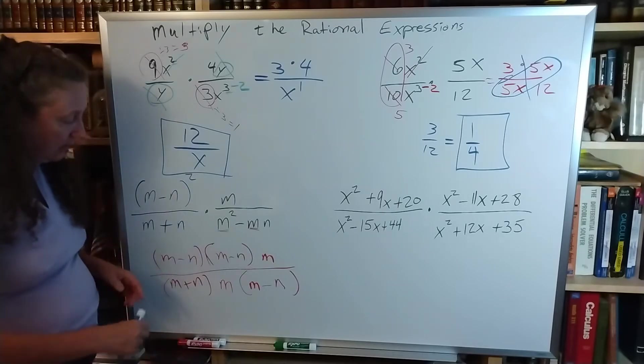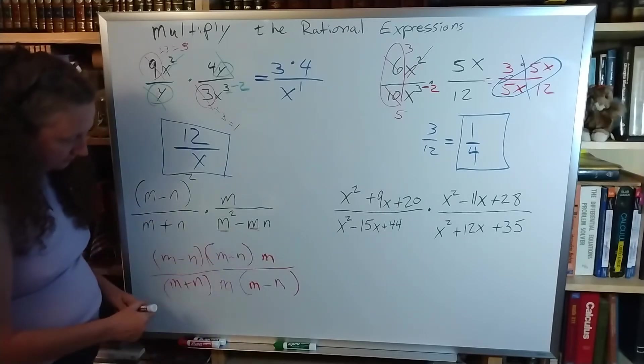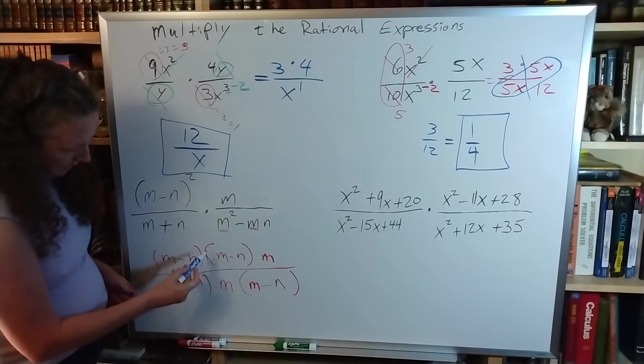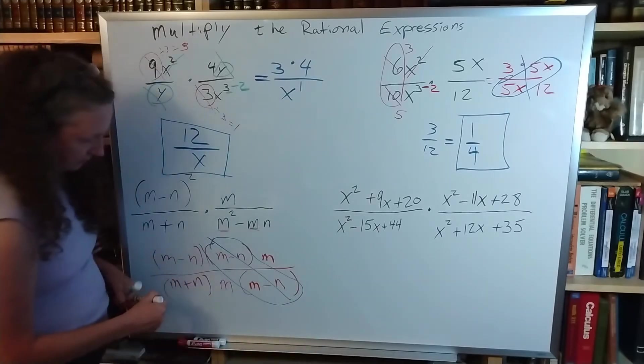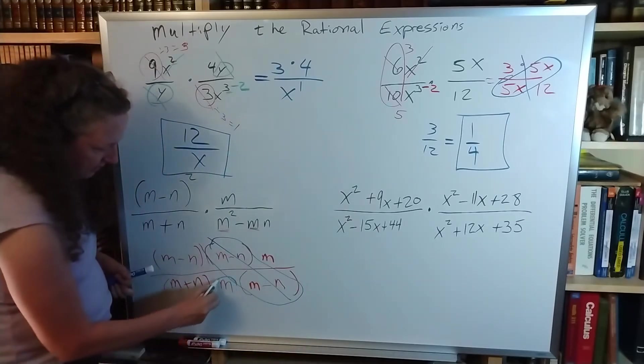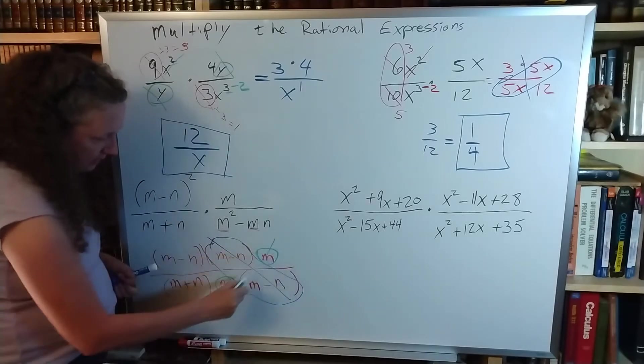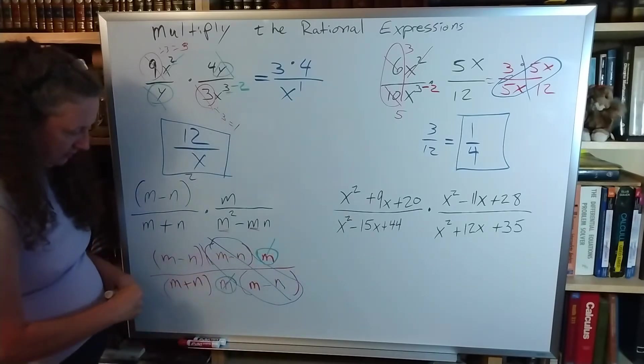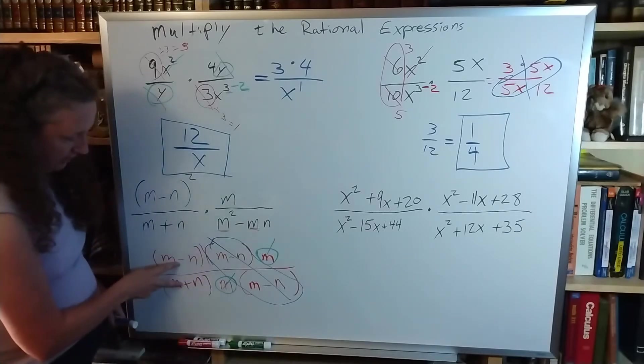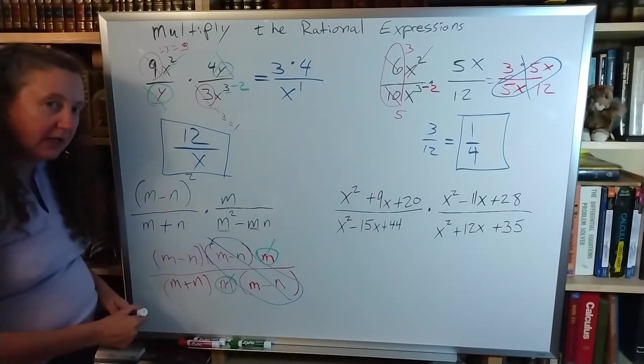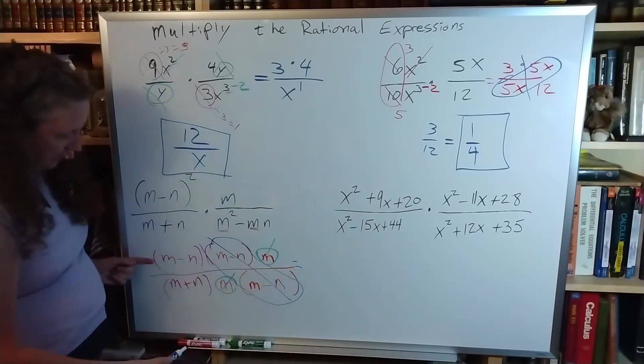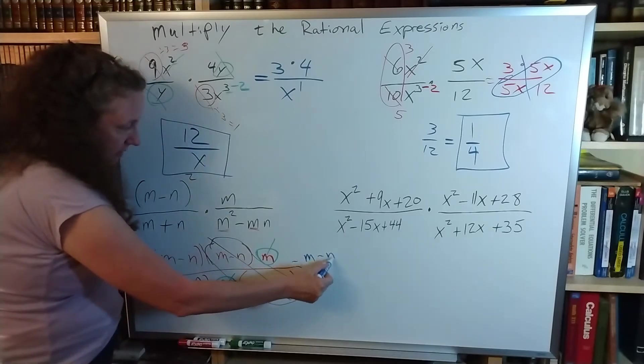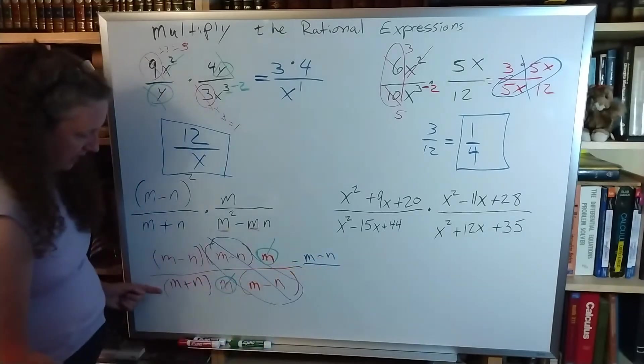Now that I've factored everything, now I have to see what can I cancel. I have an m minus n here and here, they get canceled. I have an m here and an m there, that's getting canceled. Over here I have a plus and a minus. I can't cancel them out, so those are going to be my answer: m minus n over m plus n.